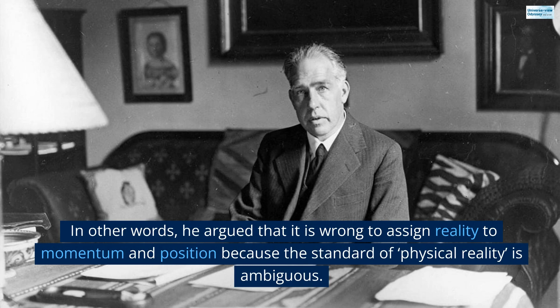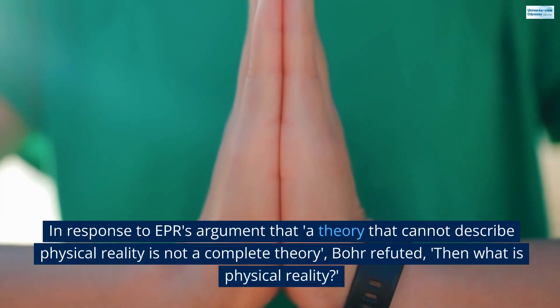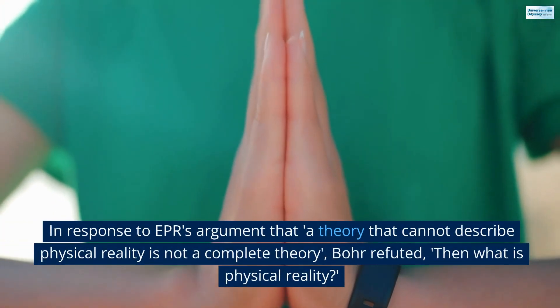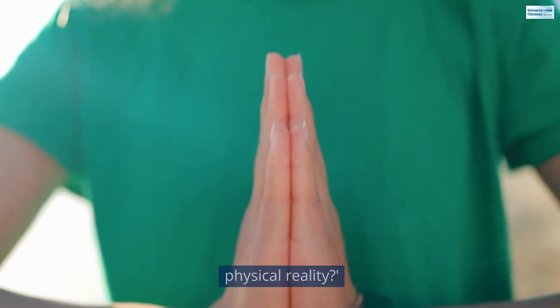In other words, he argued that it is wrong to assign reality to momentum and position because the standard of physical reality is ambiguous. In response to EPR's argument that a theory that cannot describe physical reality is not a complete theory, Bohr refuted, then what is physical reality?